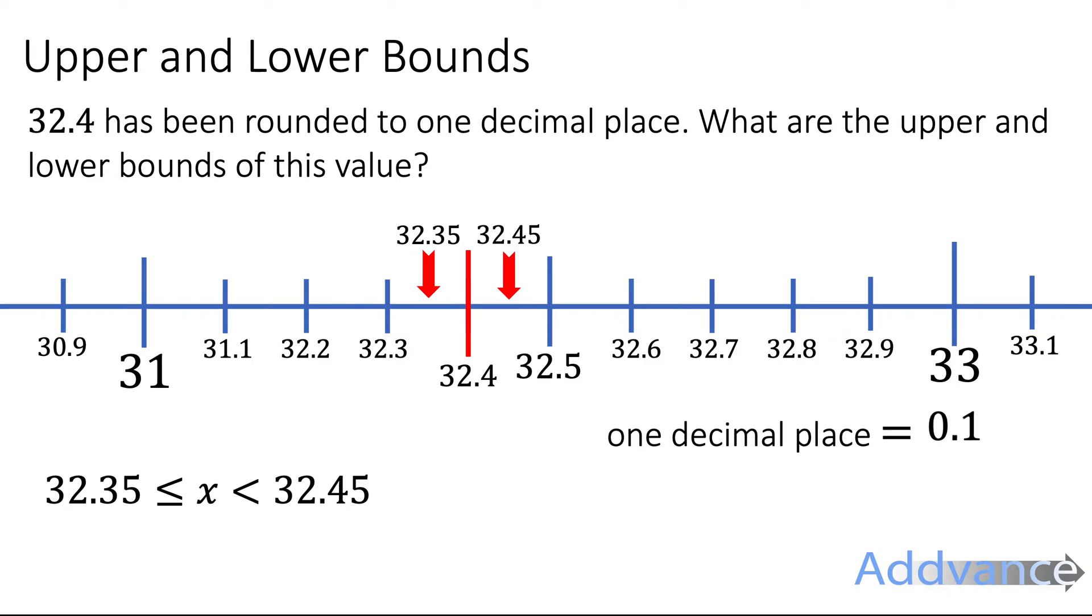What we do is we half that value. It's been rounded to one decimal place, that's 0.1, we half that to 0.05 and then we add or subtract 0.05. So 32.4, add or subtract 0.05 gives us our two possible bounds. So just half the accuracy, the degree of accuracy, and then add or subtract that amount, and you do get the upper and lower bounds for that value.